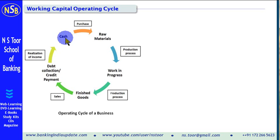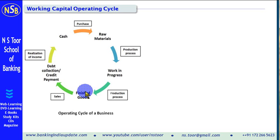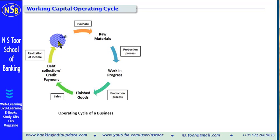So this is the working capital operating cycle. We start with cash and we come back with cash. Cash is first used to purchase raw material. Raw material is converted into work in progress. Once work in progress is completed, it becomes finished goods. Finished goods, if sold on credit, become trade debtors or book debts. Once these debts are realized, it again becomes cash.